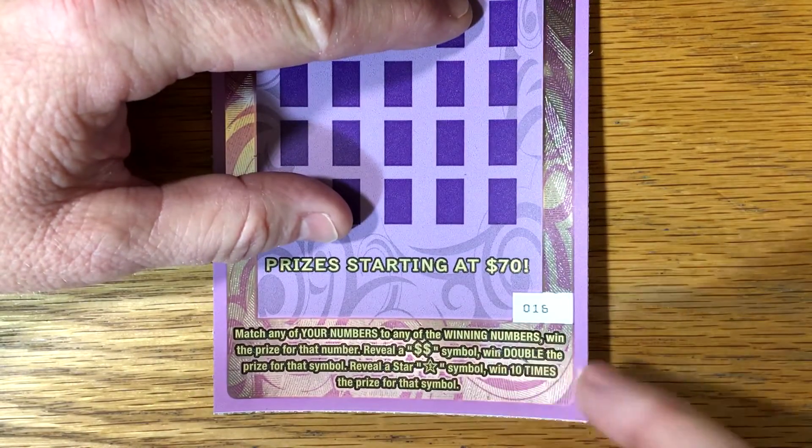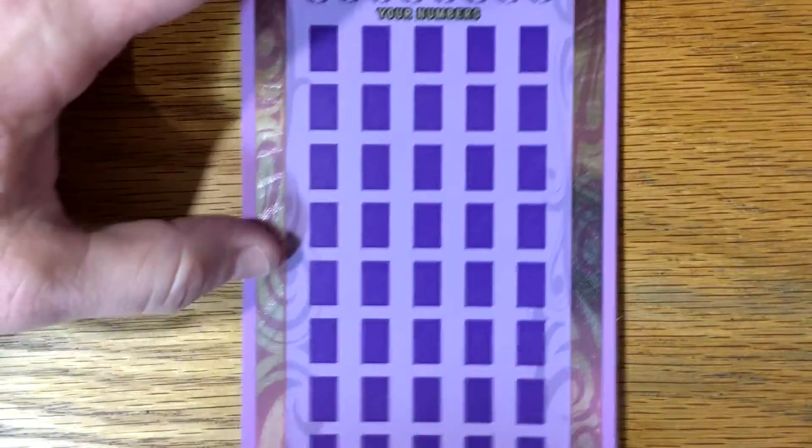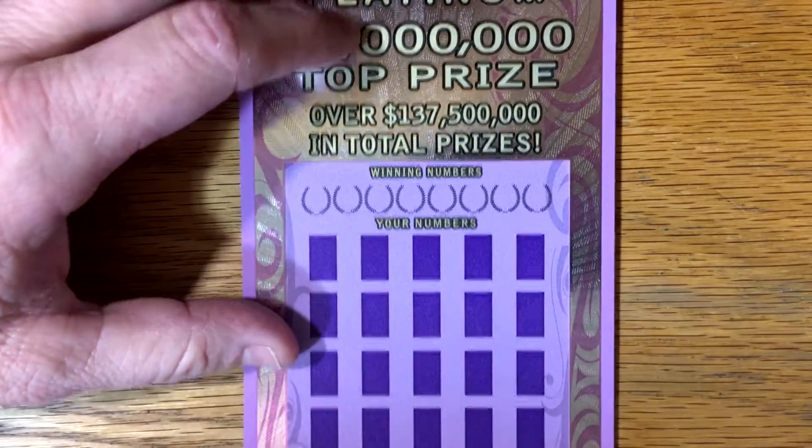Alright, besides the match and win, you get a double dollar sign for double the prize or a star symbol. You win 10 times. Alright, let's play this big ticket and find a big win. Alright, Mac, we're going for the $5 million.